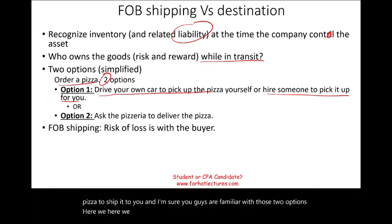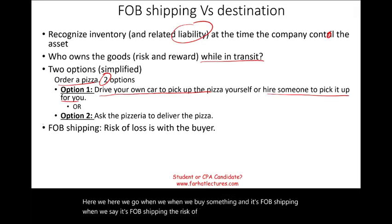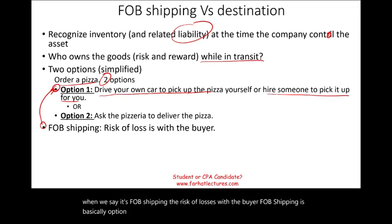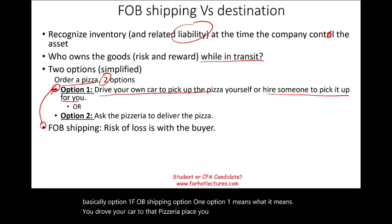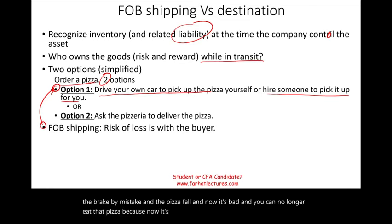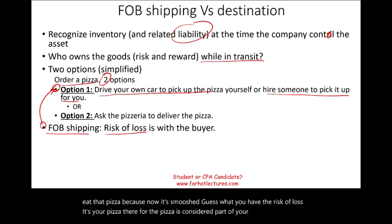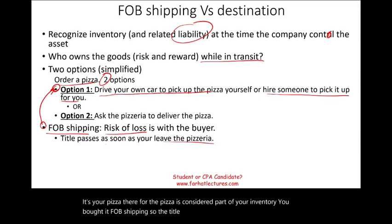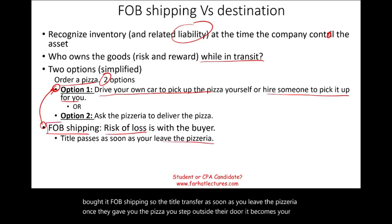When we buy something and it's FOB shipping, the risk of loss is with the buyer. FOB shipping is basically option one — you drove your car to the pizzeria, you pick up the pizza. Once that pizza is in your car, let's say you were speeding, pressed on the brake, and the pizza fell and got smushed. You have the risk of loss. It's your pizza. Therefore, the pizza is considered part of your inventory. You bought it FOB shipping, so the title transfers as soon as you leave the pizzeria.